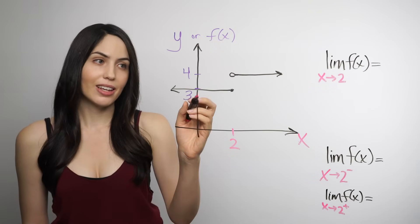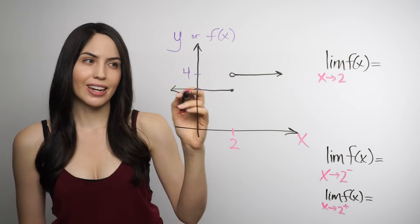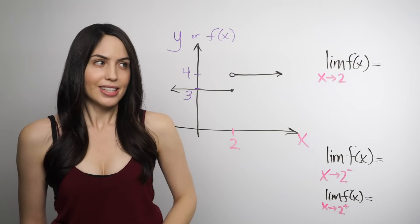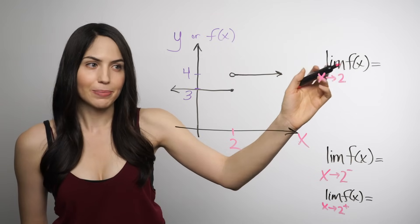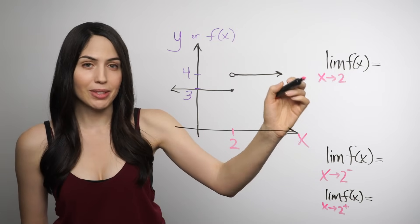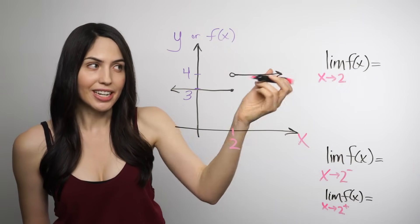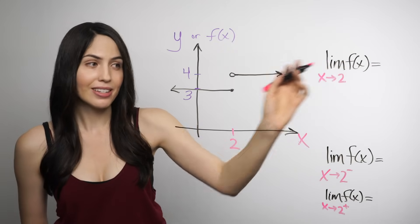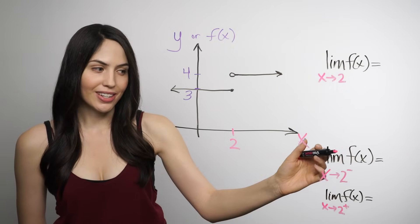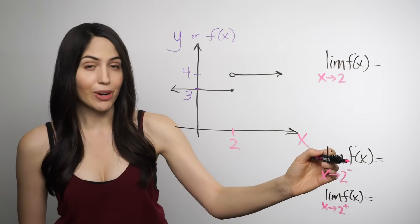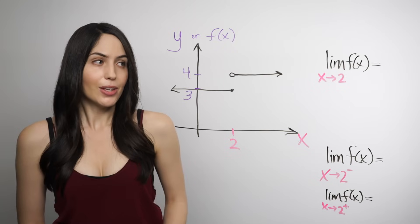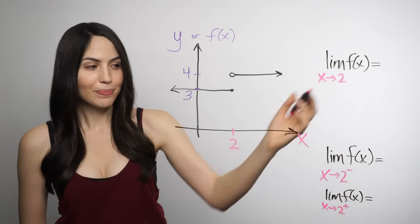Sometimes the left-side limit and right-side limit are not the same. Take a look at this graph — it looks kind of like a step function that jumps suddenly from 3 to 4. Say you want to find the limit as x approaches 2 of f of x. You still have to check from both sides — from the left side and the right side — in order to give an answer for the overall limit. This is a great chance to show you one-sided limits. If you see this notation, the minus sign means the limit as x approaches 2 from the left, and the plus sign means the limit as x approaches 2 from the right.